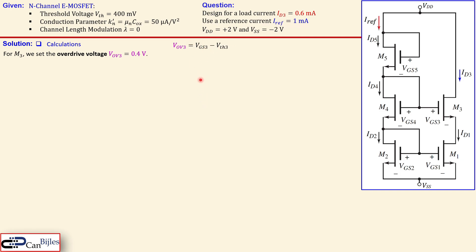Now we can then calculate how much that gate to source voltage of that M3 must be which is then VGS3 is equal to the overdrive voltage plus the threshold which is then 0.4 plus 0.4 must be 0.8.